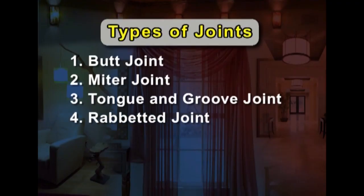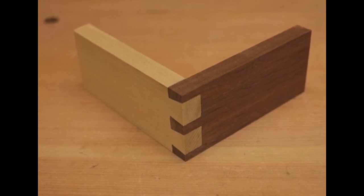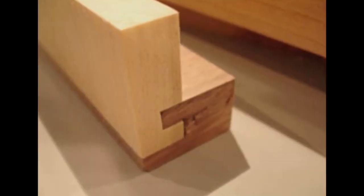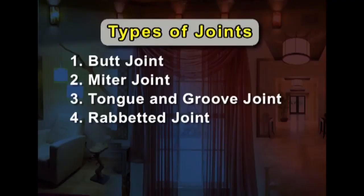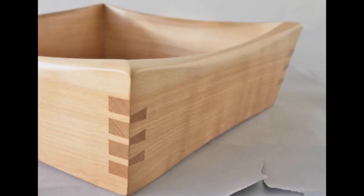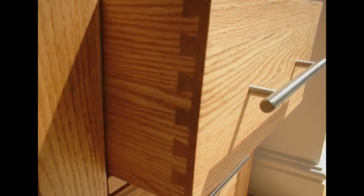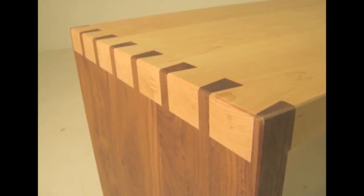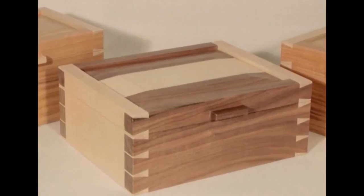The fourth one is the rabbet joint. A rabbet, also known as rebate, is a recess or groove cut into the edge of a piece of material, usually wood. When viewed in cross section, a rabbet is two-sided and open to the edge or end of the surface into which it is cut. The fifth one is the dovetail joint. A dovetail joint is a joint technique most commonly used in woodworking joinery. The dovetail joint is commonly used to join, for example, the sides of a drawer to the front. A series of pins cut to extend from the end of one board interlock with a series of tails cut into the end of another board.